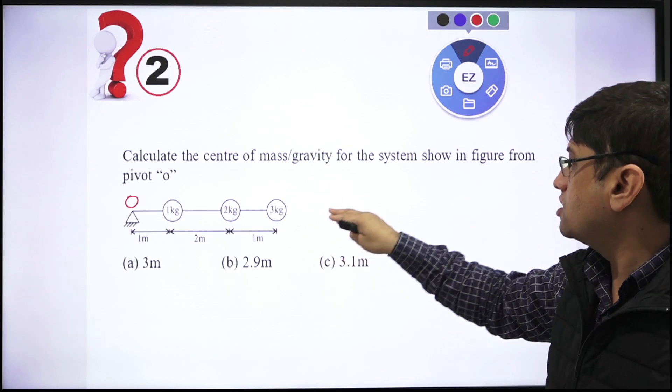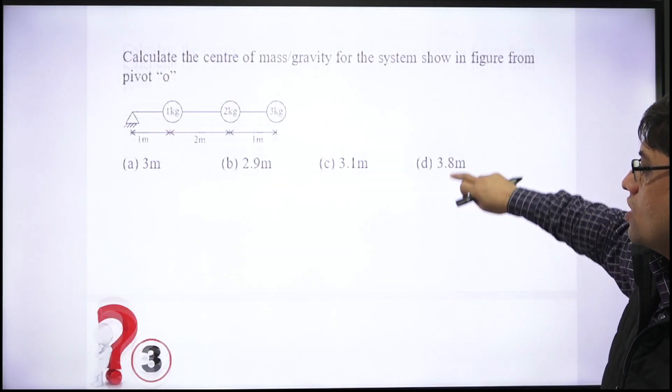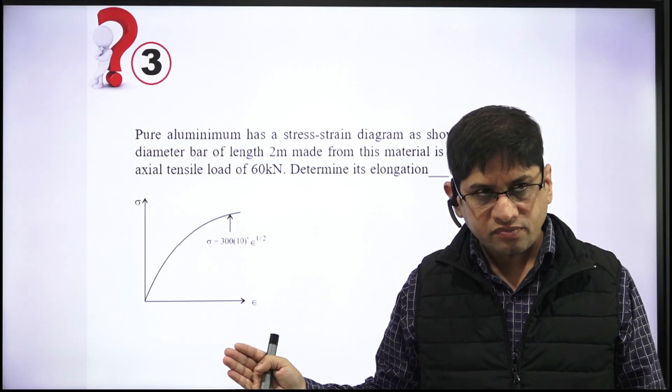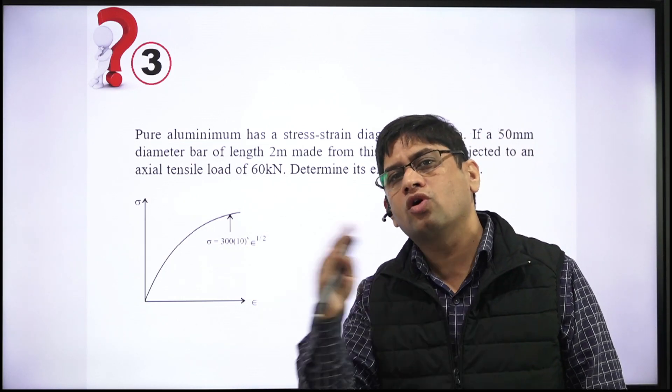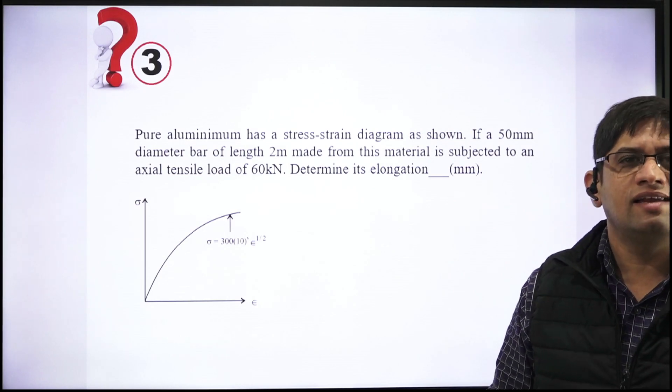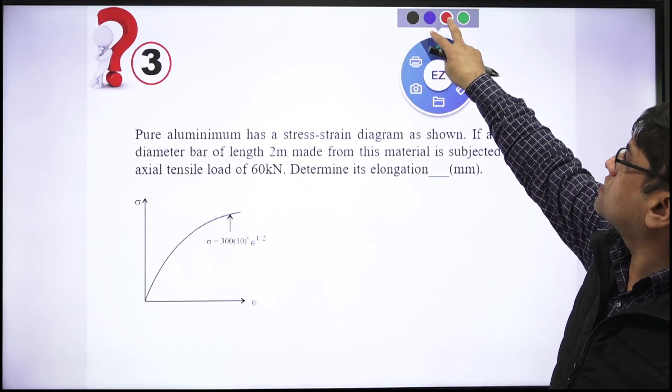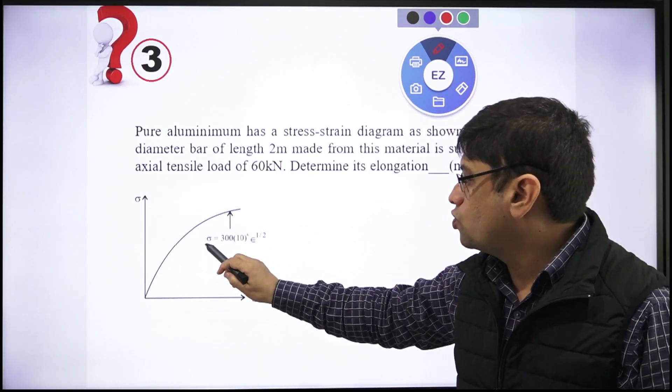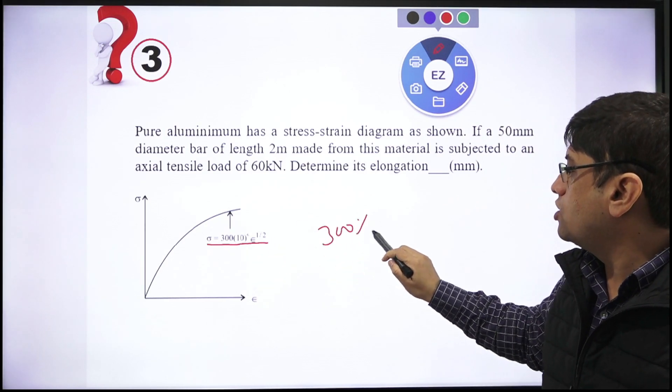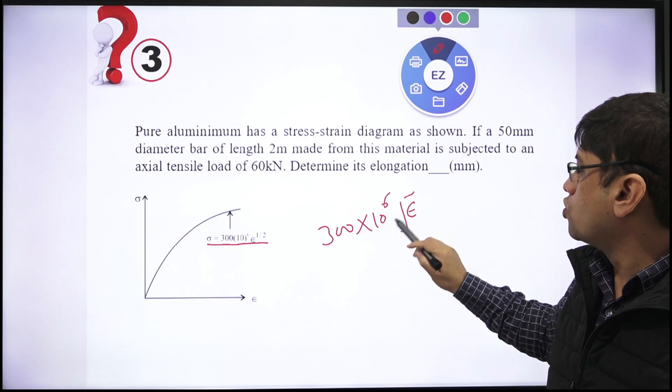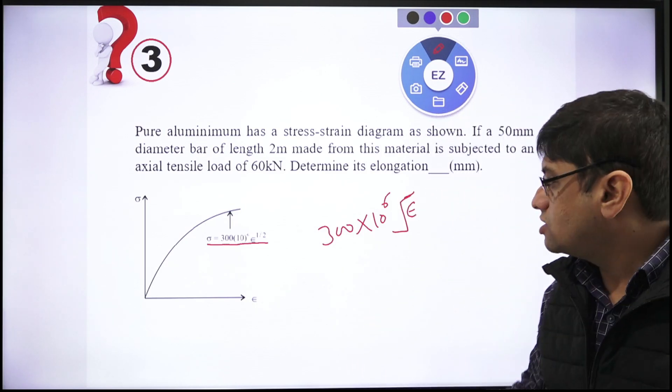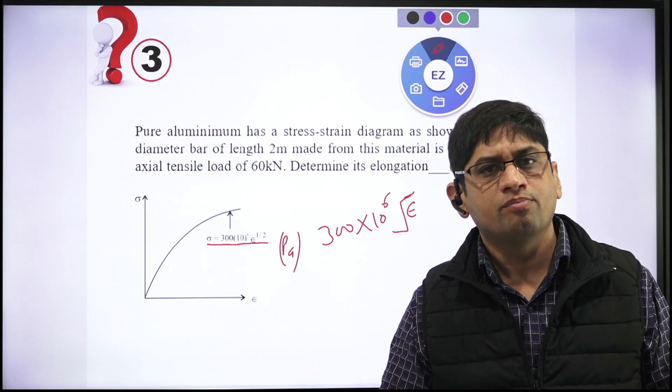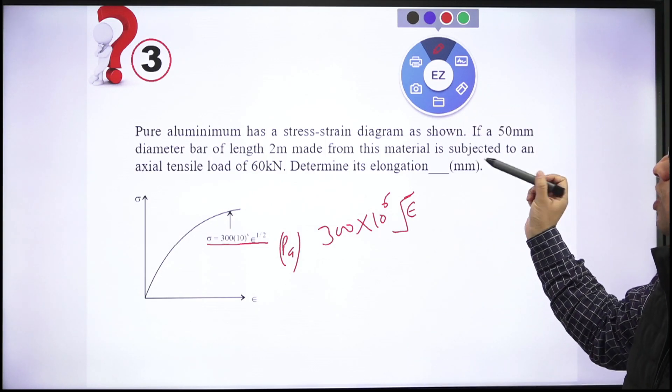Let's go for the third question now. You are given pure aluminum stress-strain diagram. You know pure aluminum stress-strain diagram—more or less you get plastic region only, elastic region is less. In the elastic region, Hooke's law is valid, but in the plastic region, Hollomon equation is valid. You are getting this equation: sigma equals 300 times 10 raised to power 6 epsilon, under root epsilon is the strain.